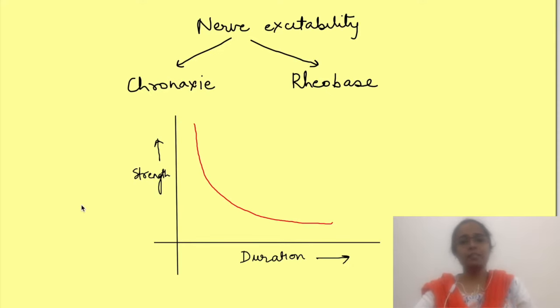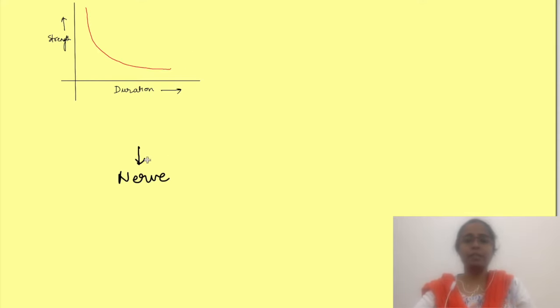For plotting this curve, we need to stimulate the nerve with an electrical stimulus. When the stimulus is of threshold intensity, the nerve responds by generation of an action potential which can be recorded.